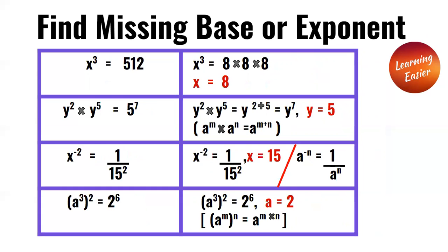y to the power of 2 times y to the power of 5 is equal to 5 to the power of 7. Since we're doing multiplication of the exponents, we add up the exponents. When doing multiplication of exponents, we need the same base number. It doesn't matter if it's division or multiplication — if it doesn't have the same base number, you have to solve the exponent equation first. Since in the answer the base number is 5, y is equal to 5.